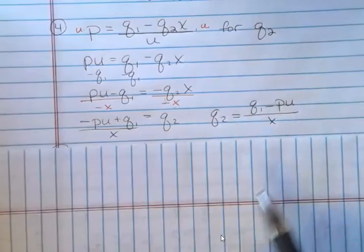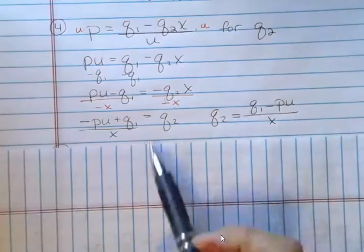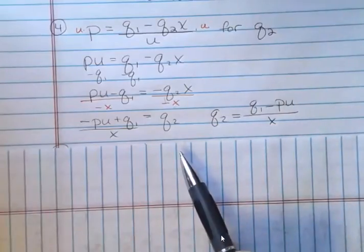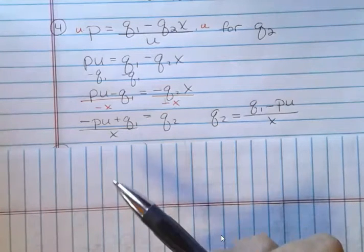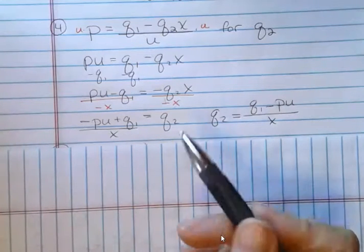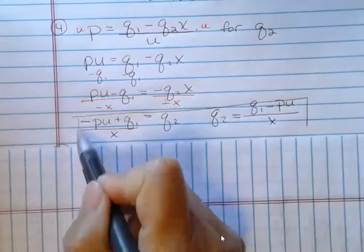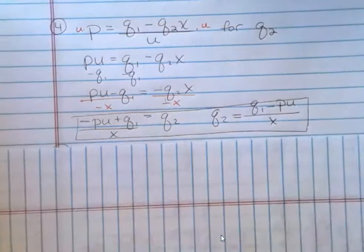Or you could say q sub 2 equals q sub 1 minus pu or up, doesn't matter, over x. So what I did was I just kept rearranging until I got q sub 2 by itself. But I didn't do that thing where I leave the negative in the denominator because that's really not good form. I would think these are the best two forms for that problem that you'd be looking at.